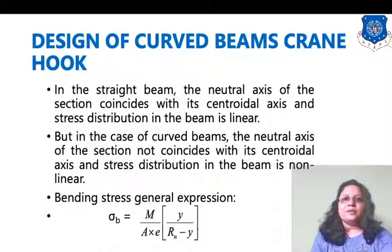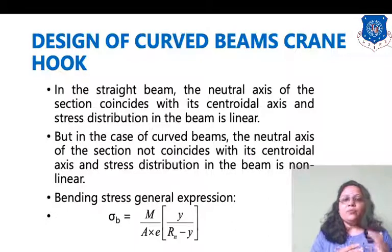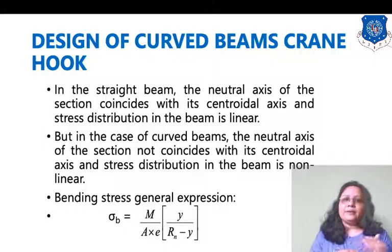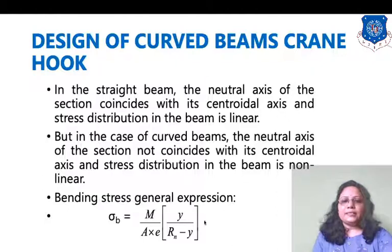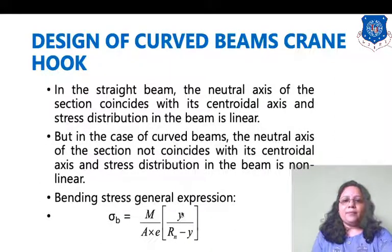Since crane hooks are designed on the basis of curved beam, bending stresses will be generated. The bending stress is denoted by sigma b and is calculated as: sigma b = M divided by A, multiplied by y divided by (rn minus y).